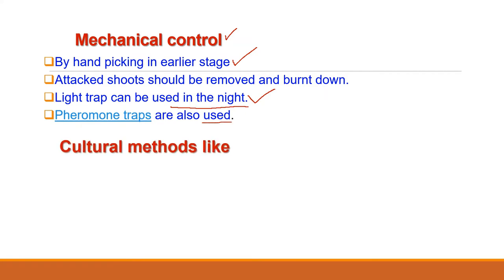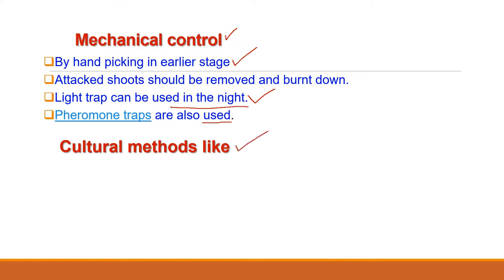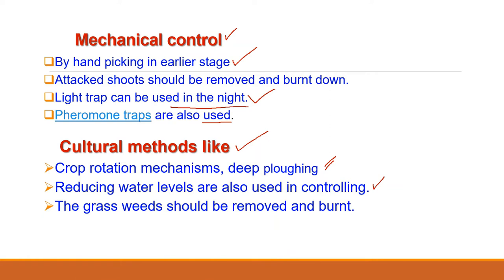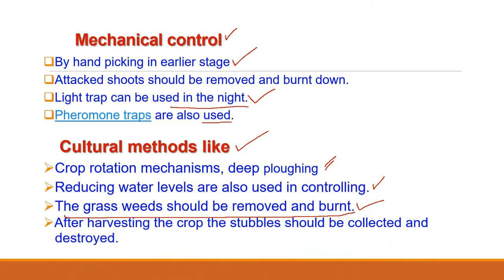The second method of control is the cultural method, which includes crop rotation. Crop rotation means the practice of planting different crops sequentially on the same plot of land to improve soil health, optimize nutrients in the soil, and combat pest and weed pressure. Reducing water levels and clean cultivation are also helpful. Grass weeds should be removed and burnt to kill eggs and larvae as these also act as host plants. After harvesting the crop, the stubbles should be collected and destroyed properly.